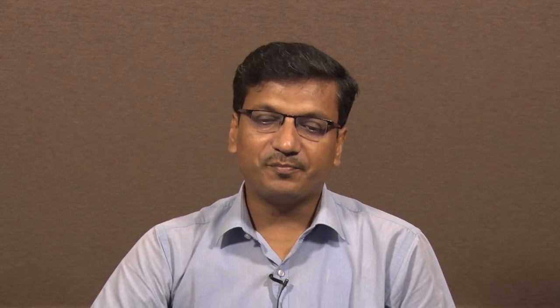This is more effective in the sense that productivity is much higher for the two-high reversing rolling mill. Similarly, we have the three-high rolling operation, which operates on three working rolls. This takes the load from two sides; depending on the rolling direction, the three-high roll consists of upper and lower driven rolls and the middle roll which rotates by friction.